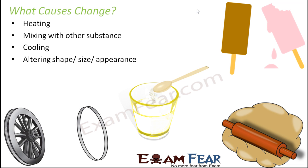Another cause of change is altering shape, size, or appearance. When you roll a chapati using a roller, you give a shape to the dough — that is a change in shape. When you cut a piece of paper, the size and shape of the paper changes. When you draw a picture on a white sheet of paper, there is a change in appearance. Change can happen due to many different factors.